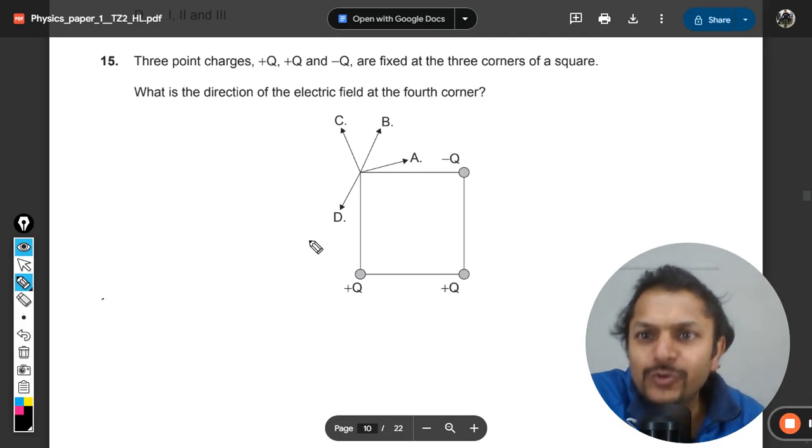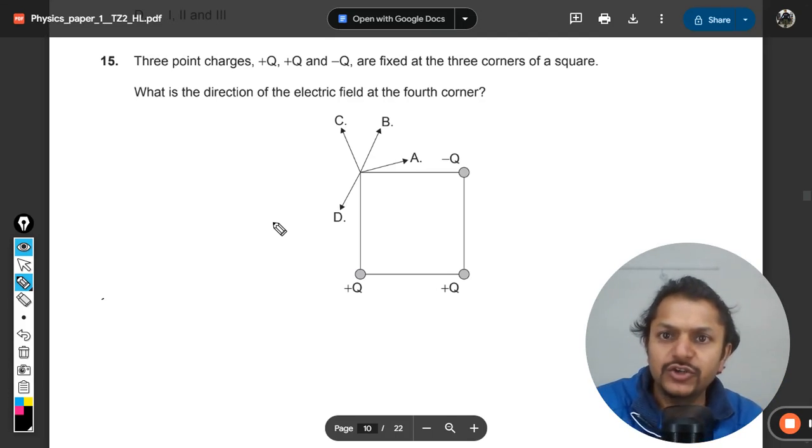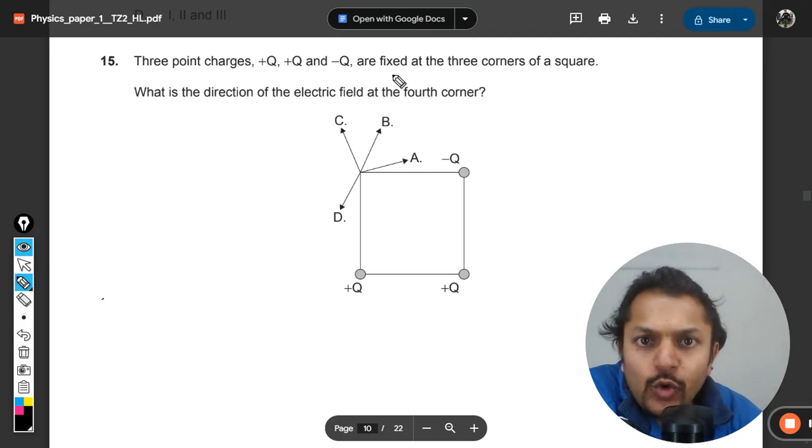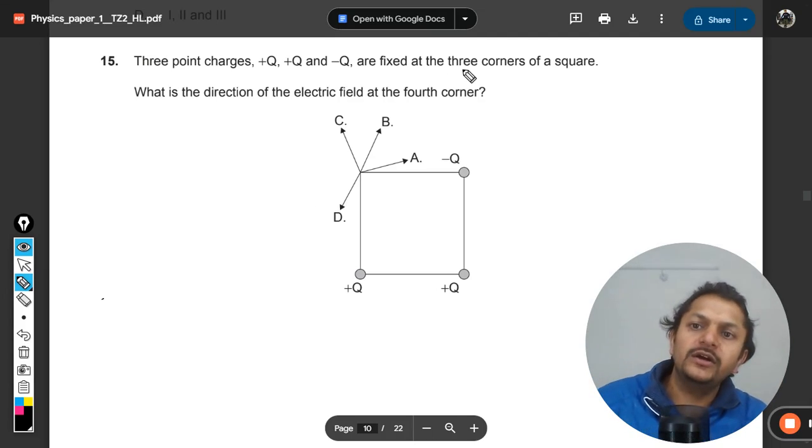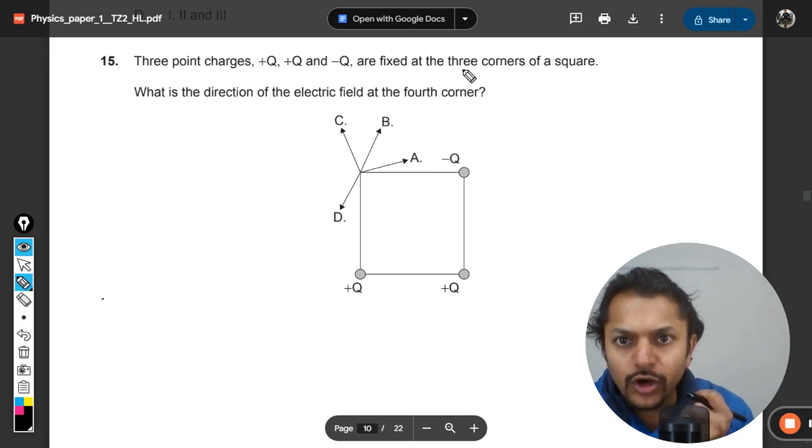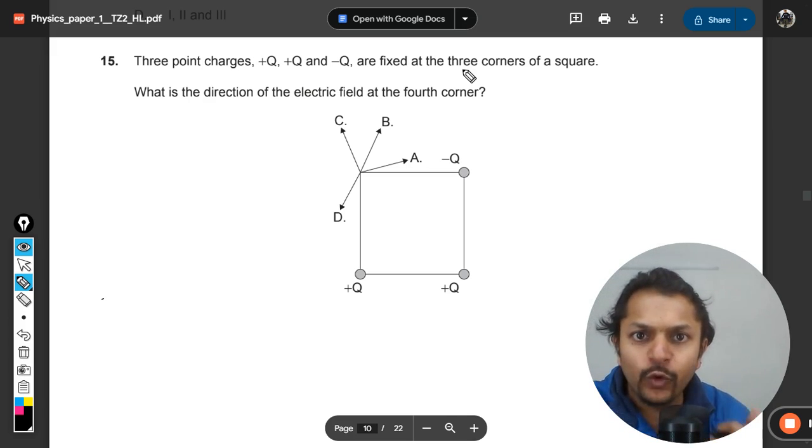Okay, let us see what is there in this question. Three point charges +Q, +Q and -Q are fixed at three corners of a square. What is the direction of electric field at the fourth corner?